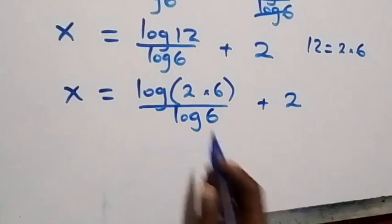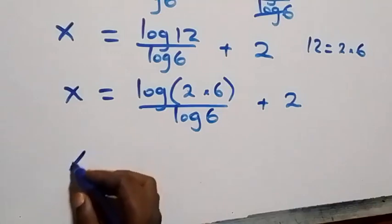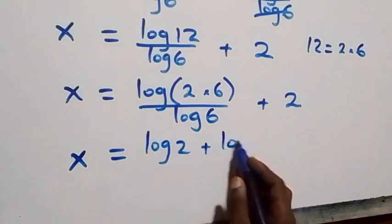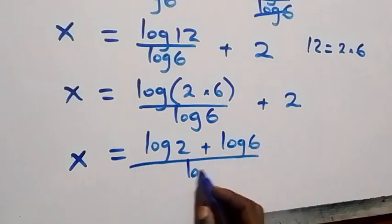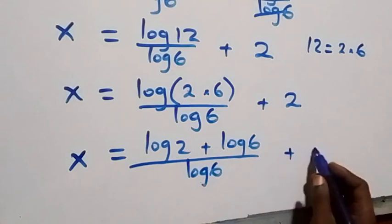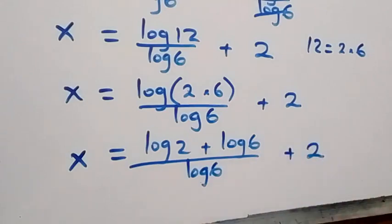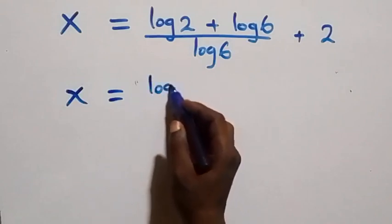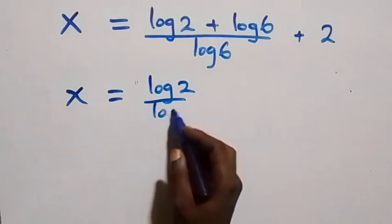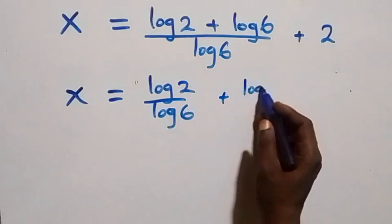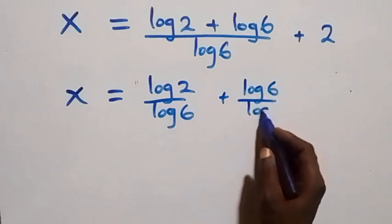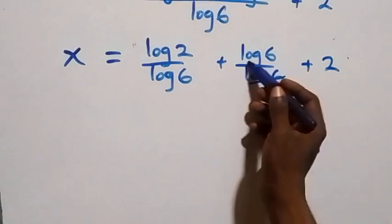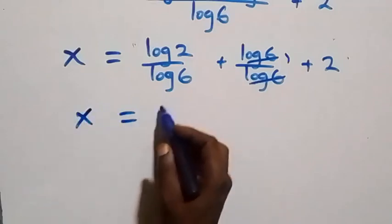Applying the product law of logarithm again, we separate this: x equals log 2 plus log 6, all over log 6, plus 2. Separating into two fractions gives x equals log 2 over log 6, plus log 6 over log 6, plus 2. The log 6 over log 6 gives 1, so x equals log 2 over log 6, plus 1 plus 2.